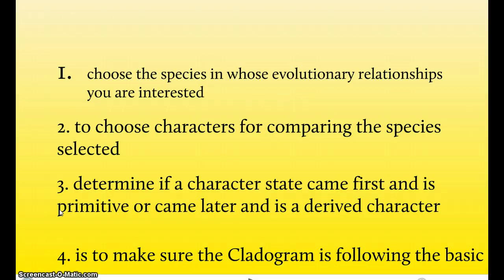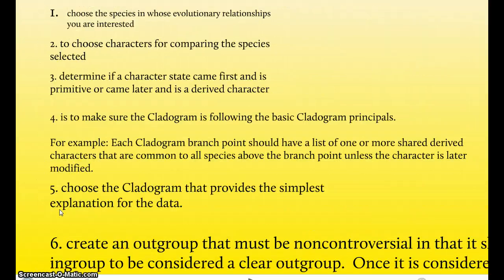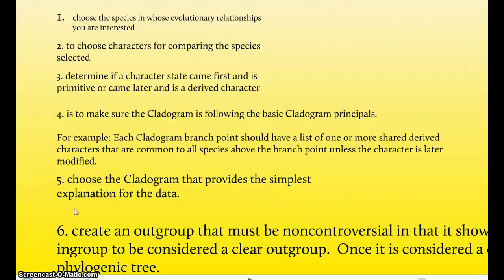Step three would be to determine if a character state came first, and if it's primitive, or it came later, and it's a derived character. So, basically, they would have to label their cladogram showing which characters are primitive, which characters are derived, the specific character states. Step four is to make sure that the cladogram is following the basic cladogram principles. There are three, but an example of one of the principles is that each cladogram branch point should have a list of one or more shared-derived characters that are common to all species above the branch point unless the character is later modified. Now, if you read that sentence and you had a cladogram in front of you, it would be easier to understand. But, the main point of this step four is to follow the basic cladogram principles.